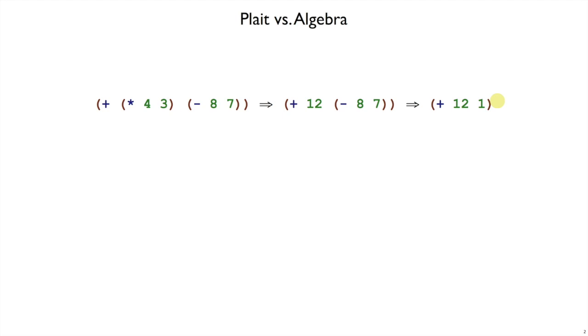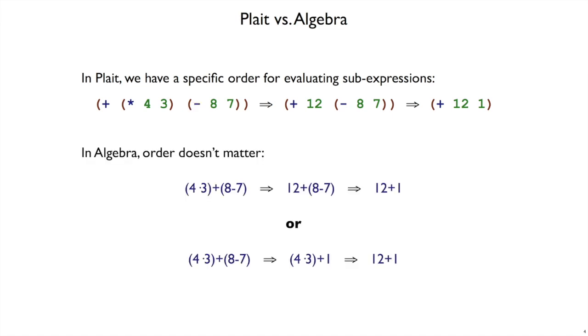The difference between plate and arithmetic or algebra is that in plate there is a specific ordering that will be used. The times 4 3 will definitely be simplified before the minus 8 7. But in regular arithmetic or algebra, the order doesn't matter. If you choose to simplify the 4 times 3 first to 12, that's fine, or you may choose to simplify the 8 minus 7 first to 1. You're going to get to the same answer either way.